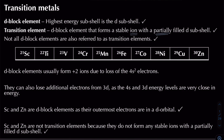The d subshell can hold up to 10 electrons. If it's completely filled that's 10 electrons; if it's empty that's zero electrons. But if it's partially filled, you're going to have anywhere between one to nine electrons in the subshell — that's something you have to remember.